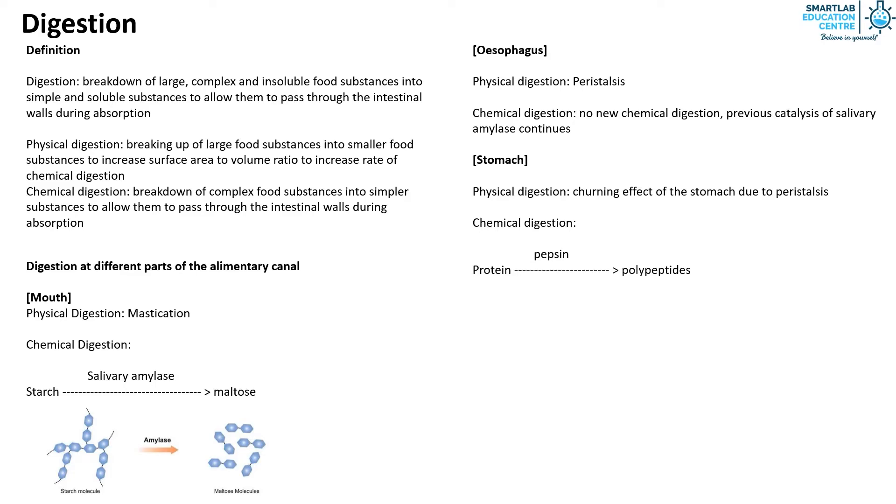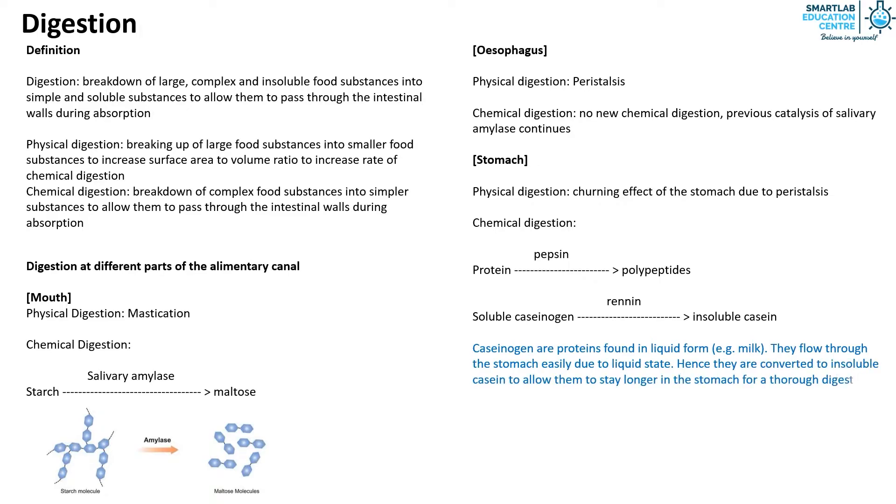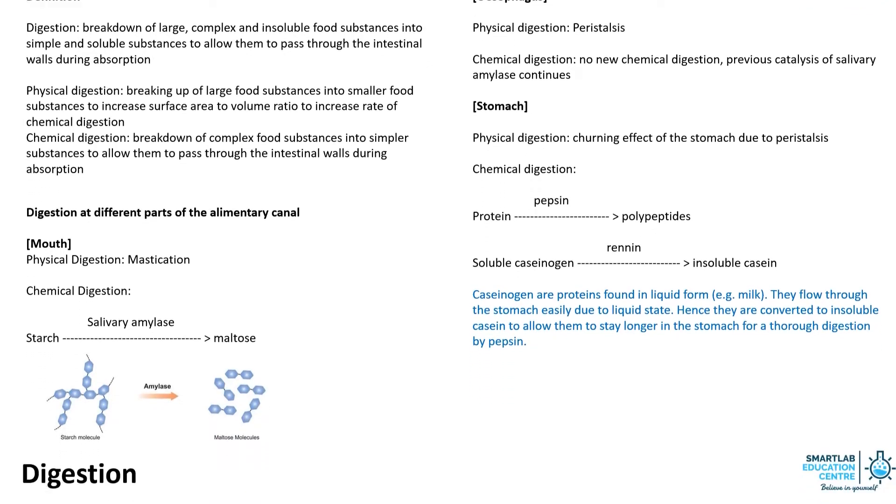The second is the conversion of soluble caseinogen into insoluble casein by renin. Caseinogen are proteins found in liquid form, for example milk. They flow through the stomach easily due to their liquid state, hence they are converted to insoluble casein to allow them to stay longer in the stomach for thorough digestion by pepsin.